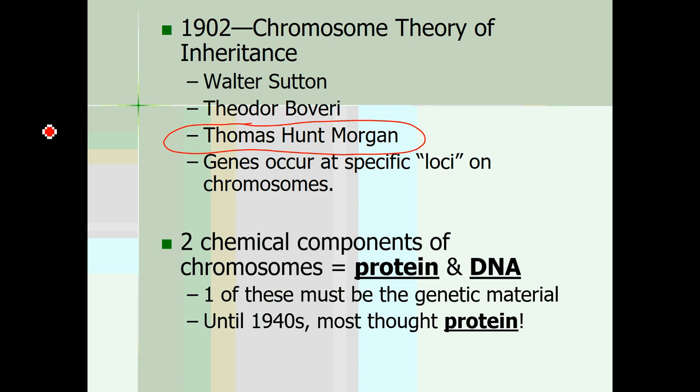DNA was thought to be too simple. DNA, after all, only has four chemical subunits — adenine, guanine, cytosine, thymine. It's almost like a genetic language that only has four letters in its alphabet. That seemed way too simple to carry the entire instruction book for a living organism, certainly way too simple for a human being. So people thought protein must be the genetic molecule.